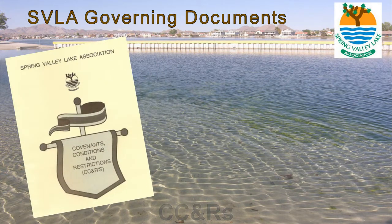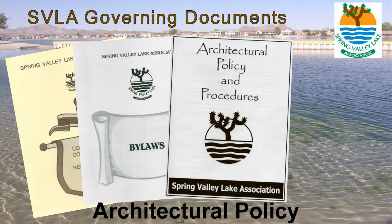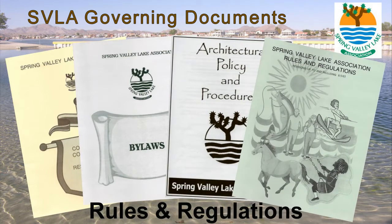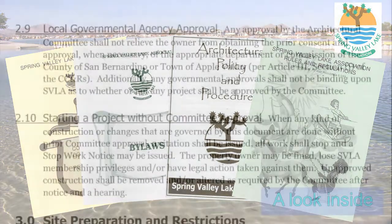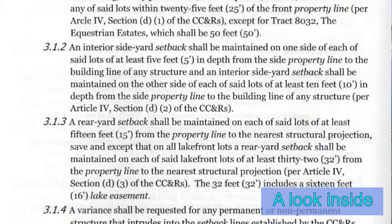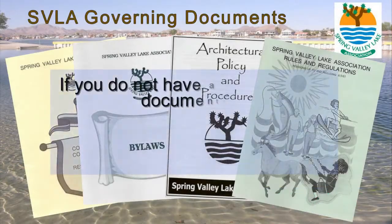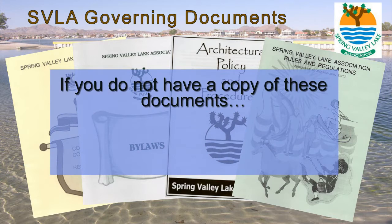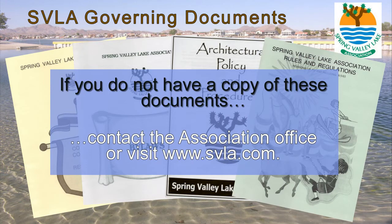Here are what the covers of our four main governing documents look like, and here is an example of the inside of one of them. You should have received a copy of all these documents when you purchased your property here — it was the responsibility of your real estate agent and escrow officer. As a property owner, you are responsible for being familiar with the contents of these documents. If you do not have a copy of them, contact the association office or visit www.svla.com.